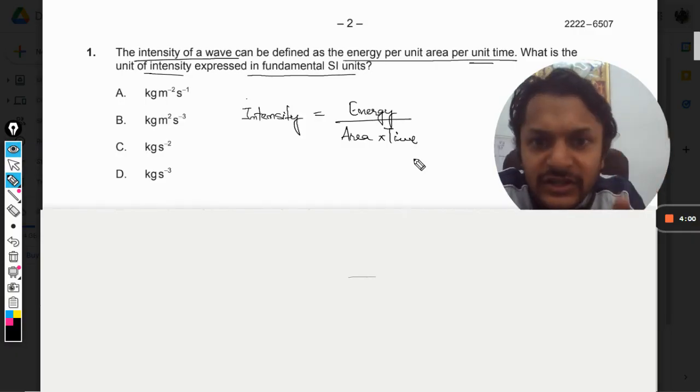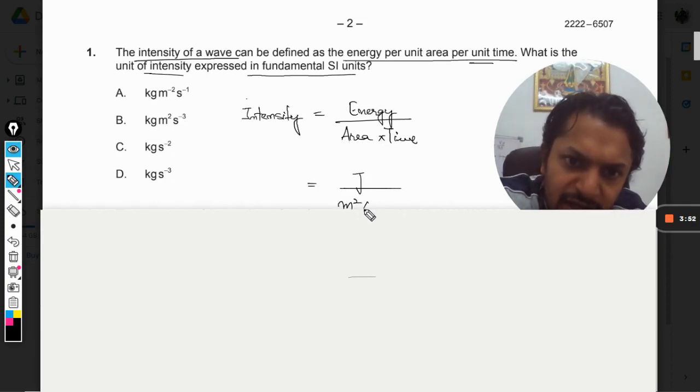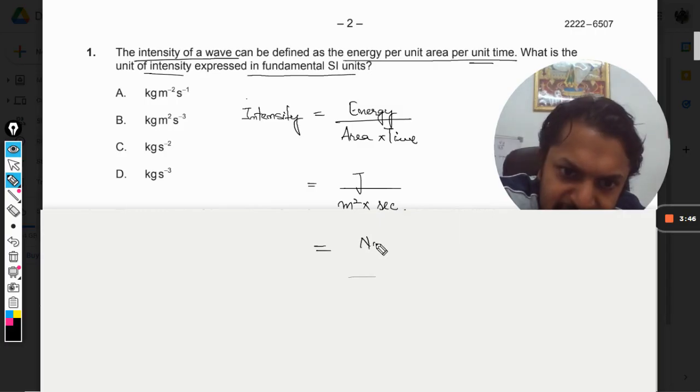We just need to substitute the SI units for the respective physical quantities. For energy it will be joule, for area it will be meter square, and for time it will be second. Now joule can be taken as newton meter, so meter and meter gets cancelled.